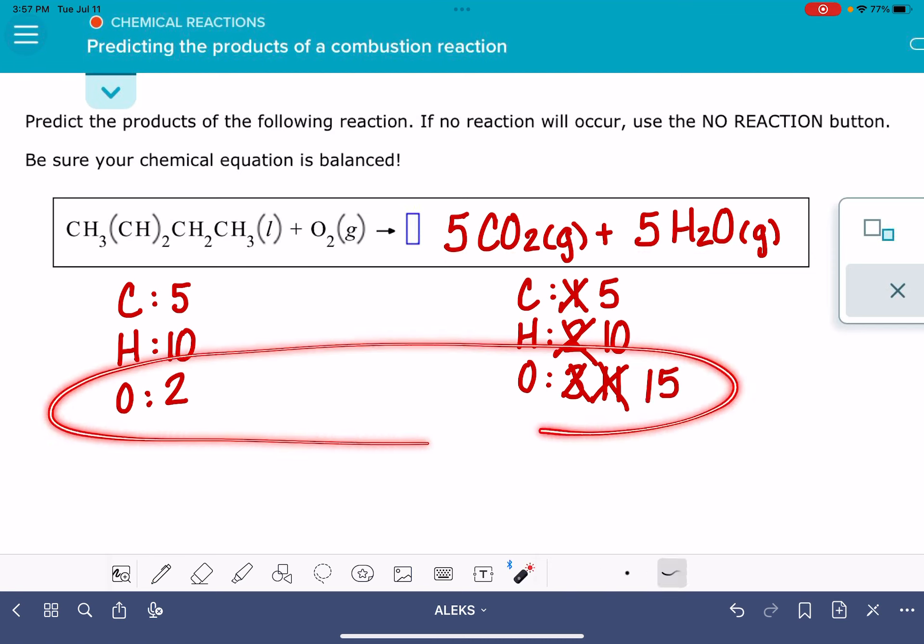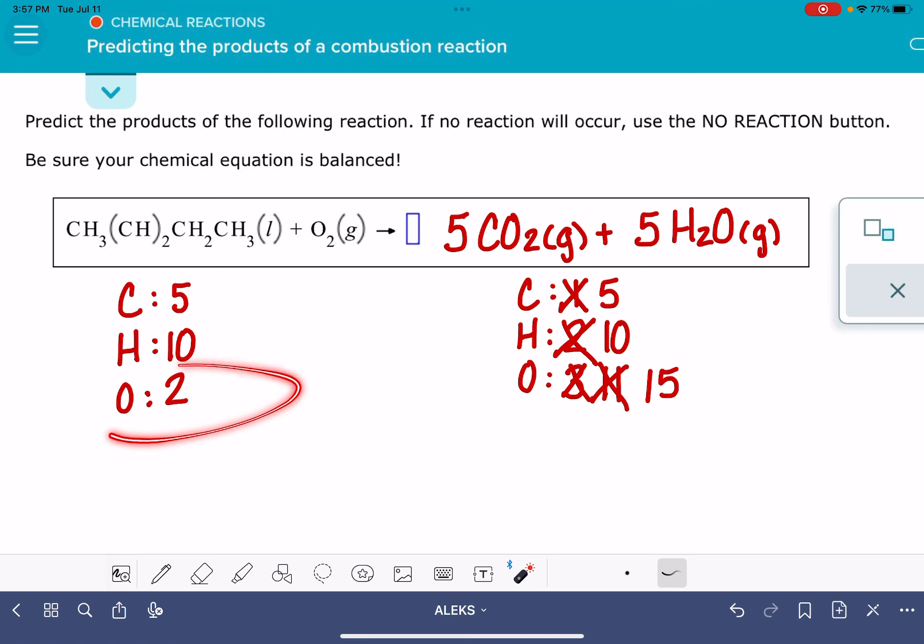Now I'm going to balance my oxygen, and I am in a little bit of a situation here because I need a total of 15 oxygen on the left-hand side of the equation, but as you can see, the oxygen atoms only come in even numbers. So I could have 2 or 4 or 6 or 14 or 16, but I can't have 15 because that's an odd number. And this is not an uncommon situation to be in in a combustion reaction problem, a balancing equation problem.